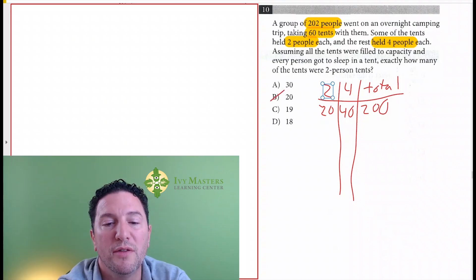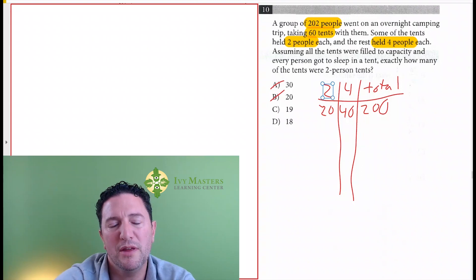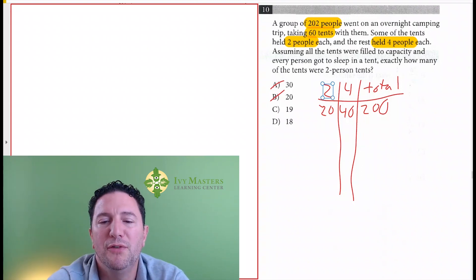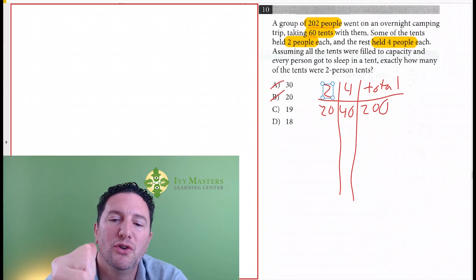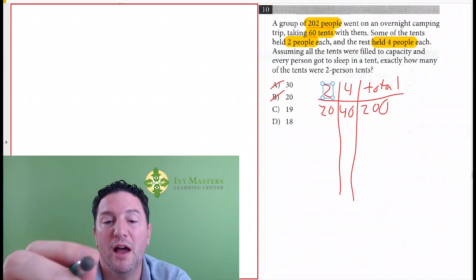So if 20 is wrong, then 30 is also going to be wrong. And if you really think about it, if you replace one two-people tent with a four-person tent, that's an increase of two people. So that should work out. Let's test it out.